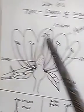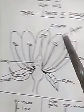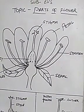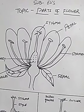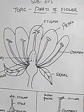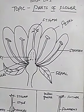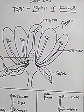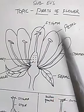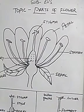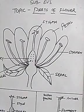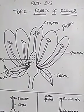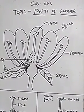Now, next to sepals are the petals. These are the petals — all of these are petals of the flower. These are generally bright colored and scented to attract the insects that help in pollination. They come in different colors and attract insects.